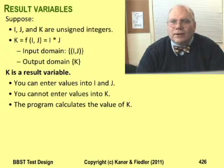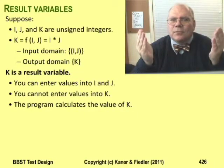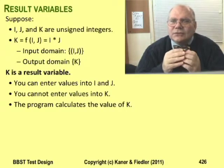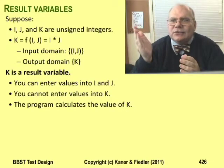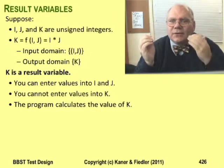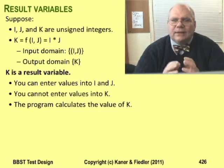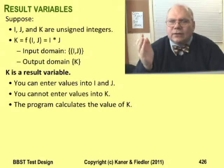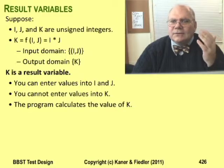Now let's consider result variables. Functions have inputs and they have outputs. Consider a function f that has two input variables, i and j. f's output variable is k. It sets the value of k to i times j. f's input domain is the set of all possible pairs of values i and j. f's output domain is the set of all possible values of k.